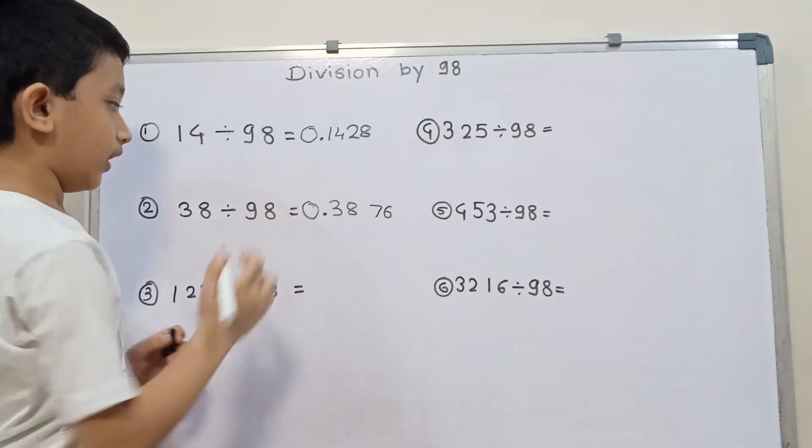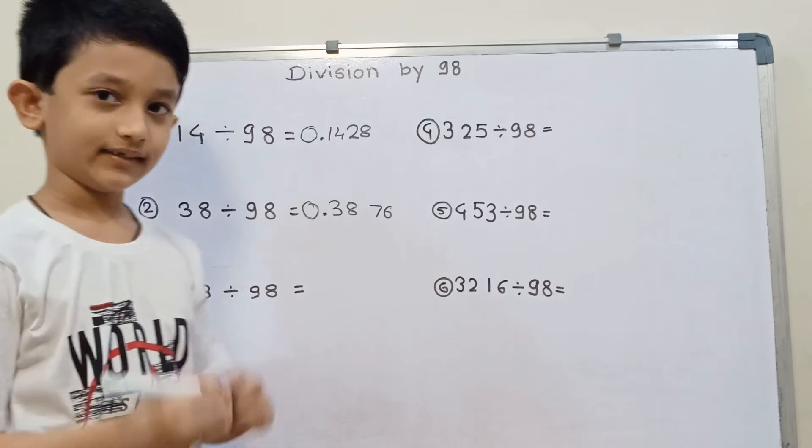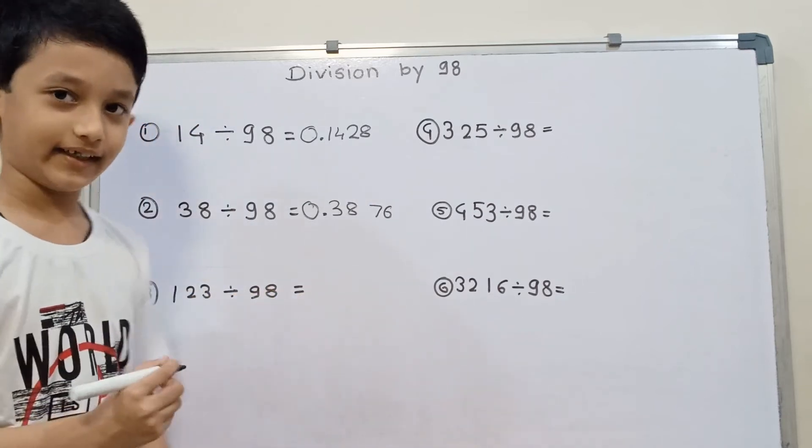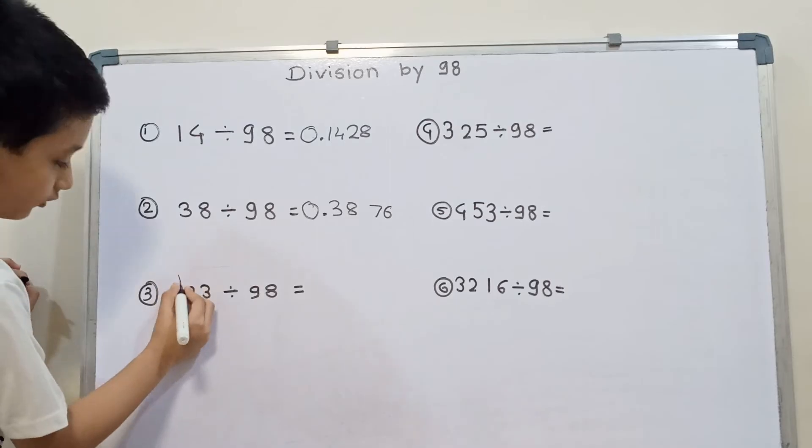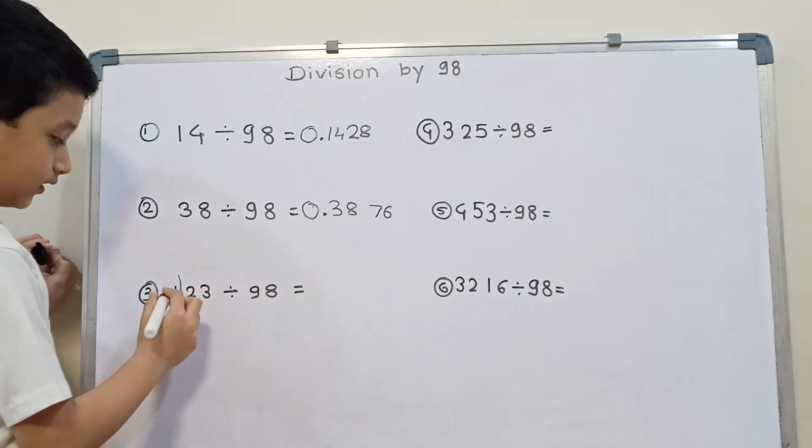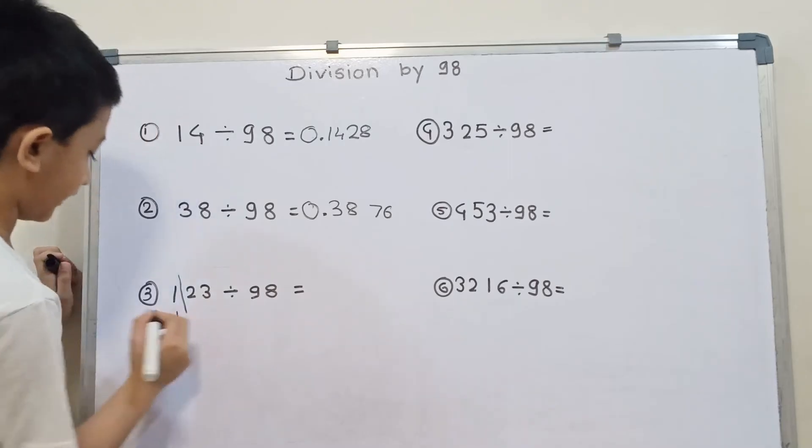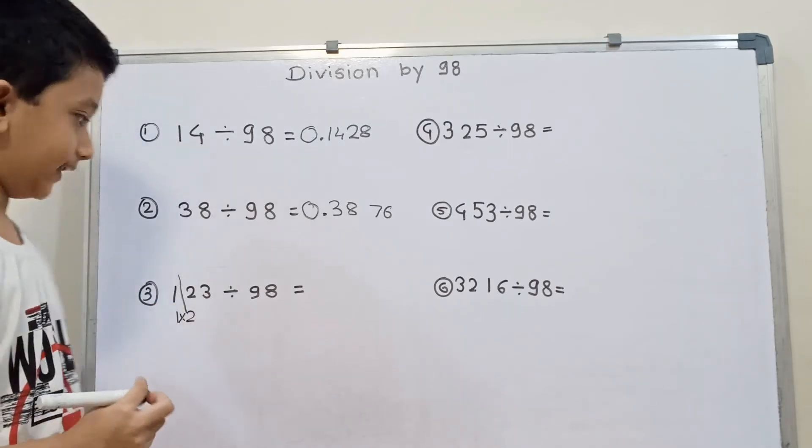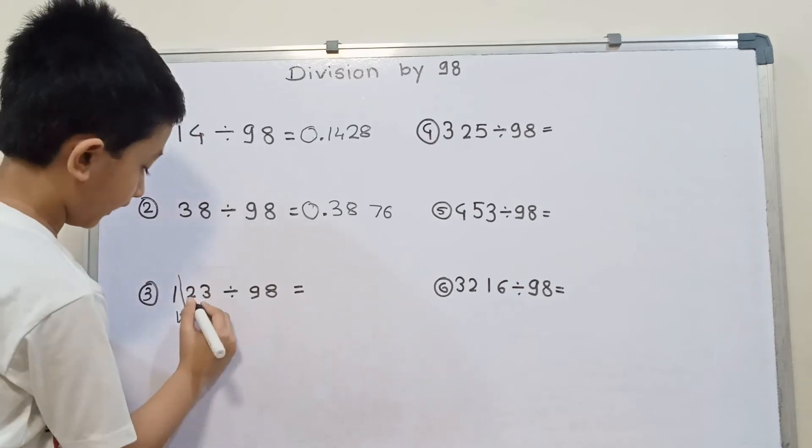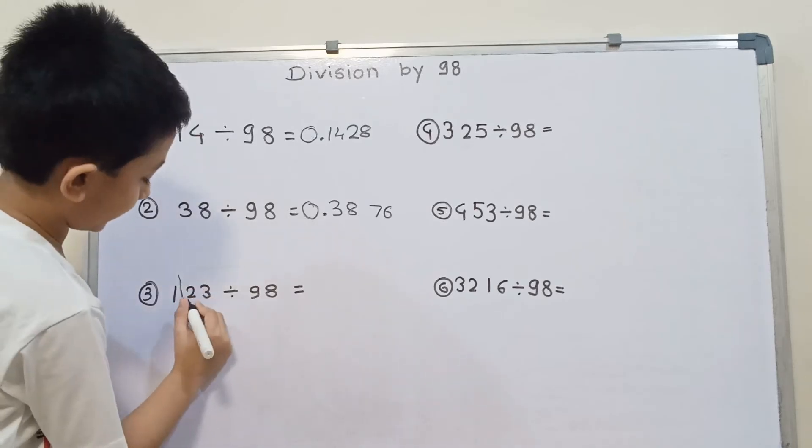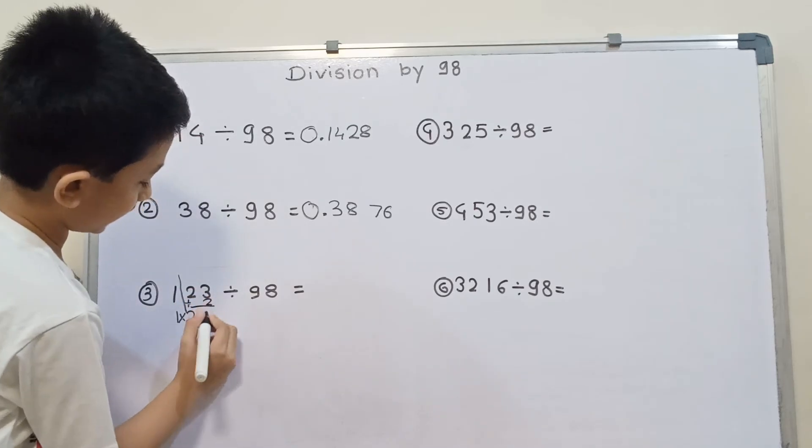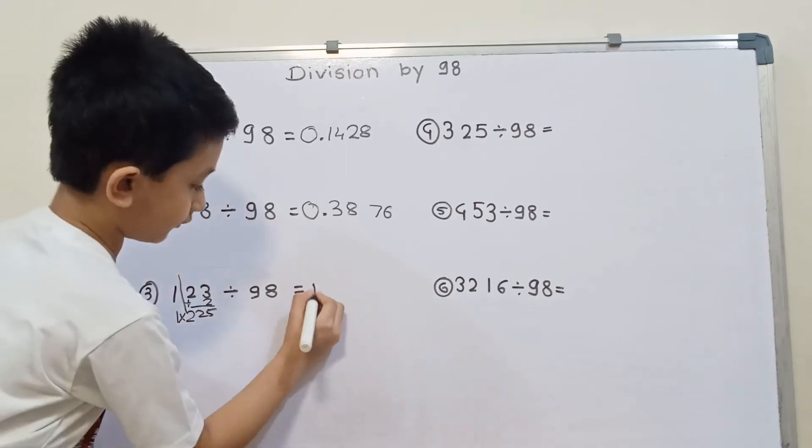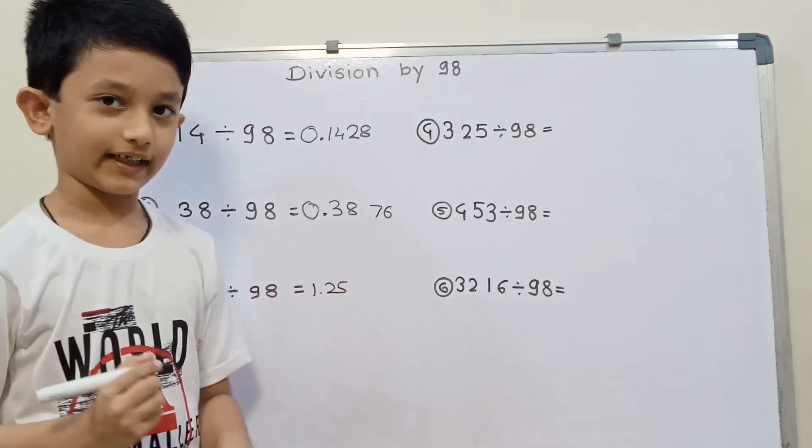The answer is 0.3876. Then 123 divided by 98. We will divide it into 2 parts. First we will write 1 as it is. Then 2, 1 times 2 is 2. And then we will add 23 plus 2 that is 25. So the answer is 1.25.